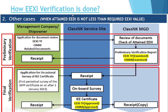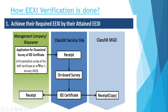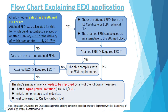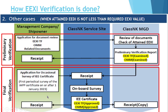The main thing comes for the second type of ships, which is the most common case — when the attained EDI is not complying with the required EXI value. In that case, you first have to take certain measures like engine power limitation, an ESC device, or conversion to a different type of fuel. There will be two procedures: a preliminary verification and then a final verification.